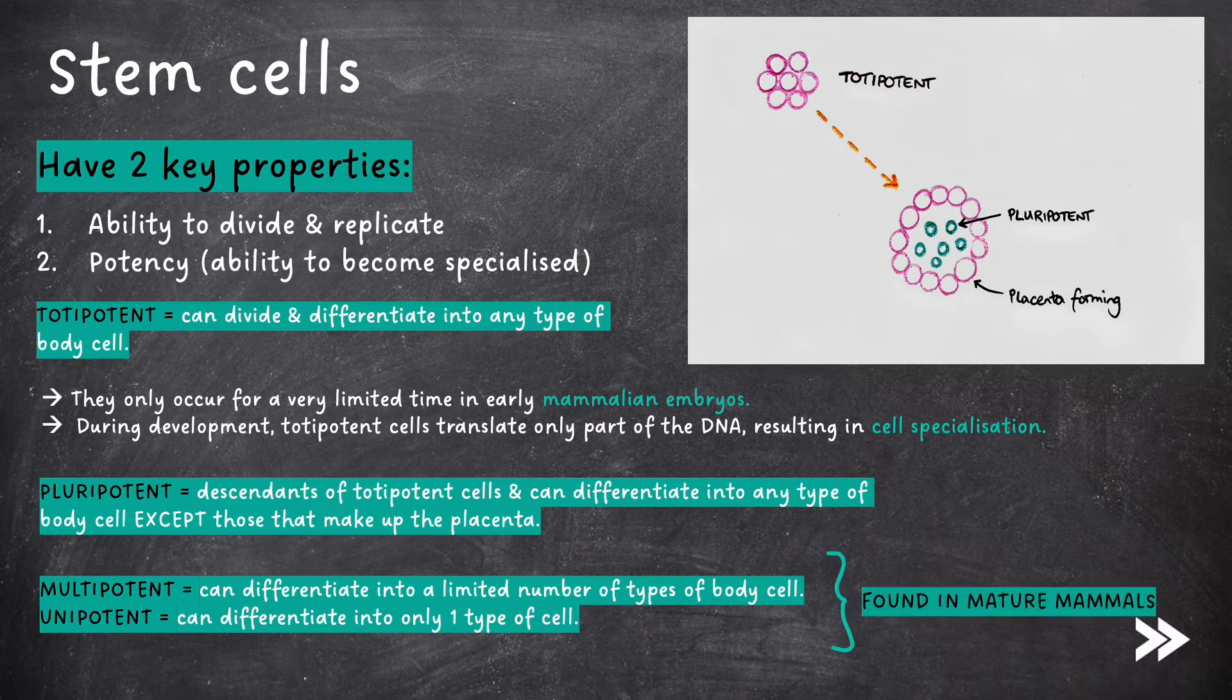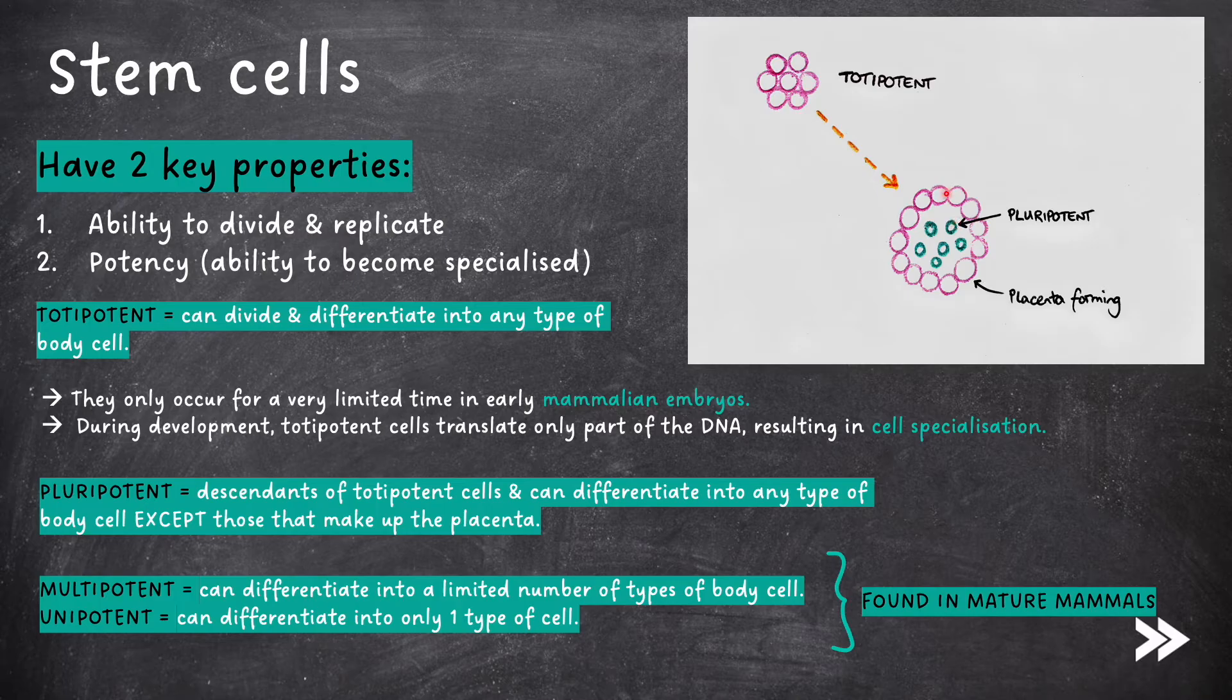So just to make the distinction between totipotent cells with the help of a diagram, in early mammalian embryos we have totipotent stem cells. These then develop into something looking like this. We have pluripotent stem cells as well as cells making up the placenta. These pluripotent stem cells can differentiate into all types of body cell, apart from those that make up the placenta.